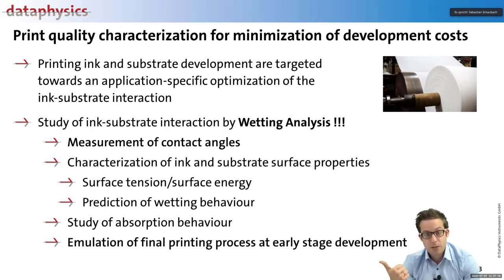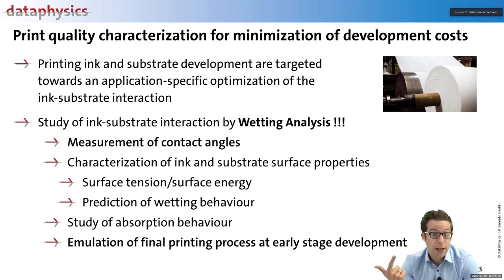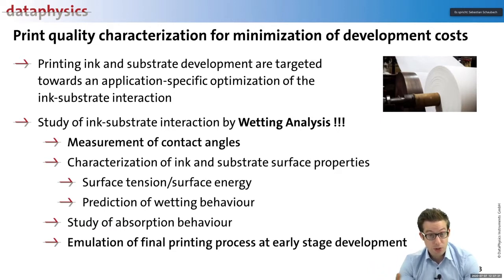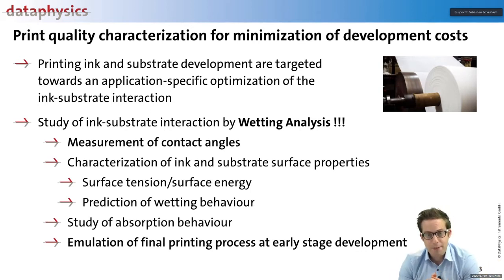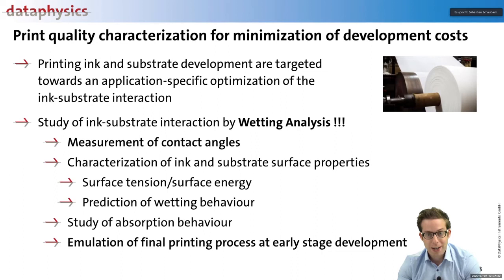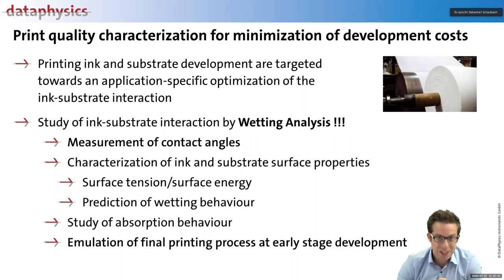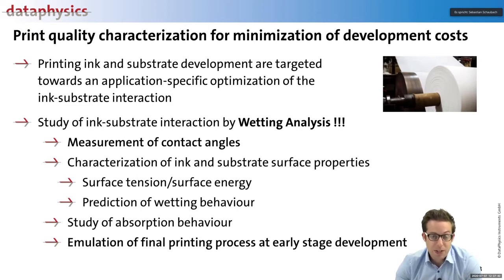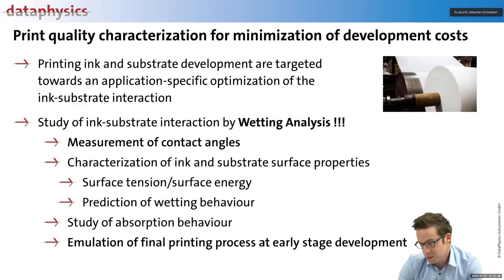We can divide surface tension into two parts: a polar contribution from polar interactions in the ink, and a dispersed interaction component. When we do the same characterization for the solid surface — assessing its polarity — we can predict how well they will match. From chemistry: same like same. If you have a polar surface and a polar ink, you have a match and adhesion is good. Studying both solid material and ink together lets you optimize both parameters — either change the polarity of the ink or change the surface treatment of your solid material.